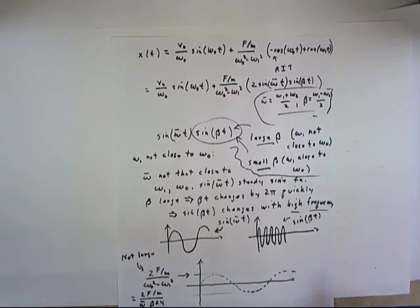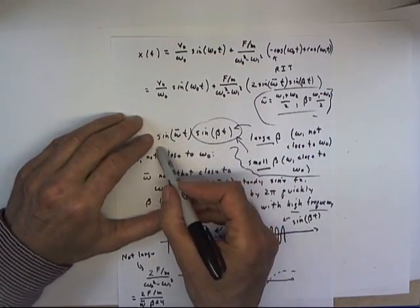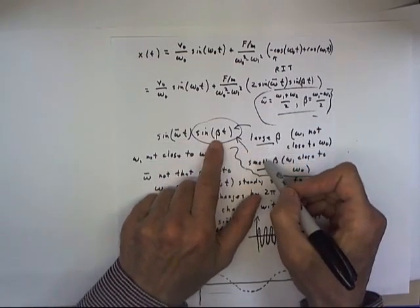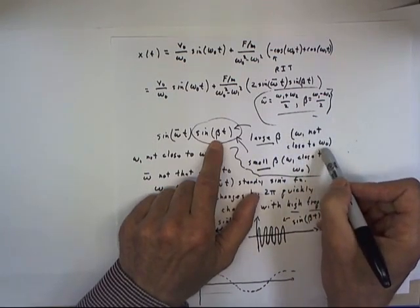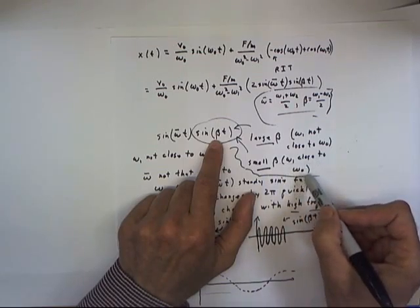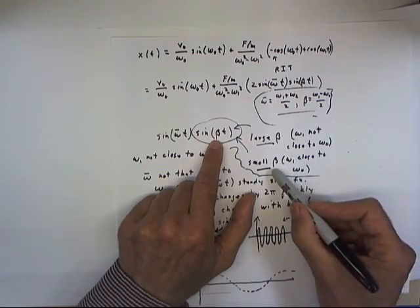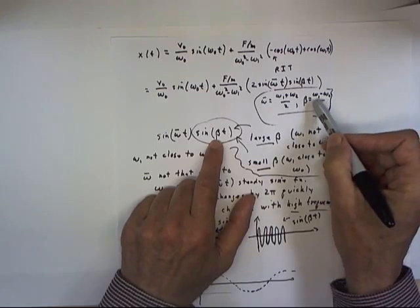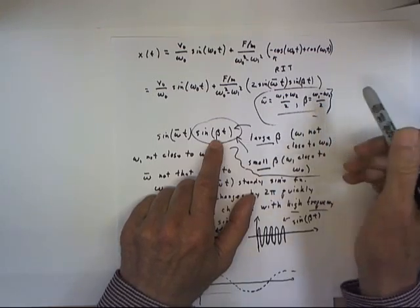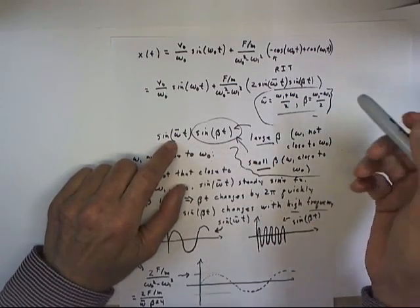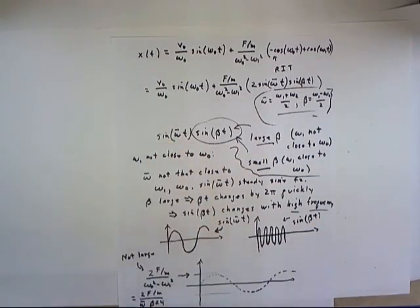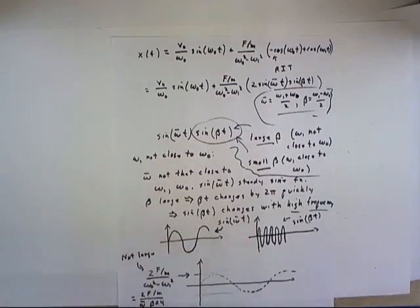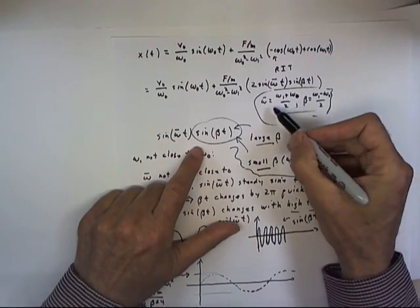Now let's look at all that in a little more detail. The key product to understand is sine of omega-bar t times sine of beta t. We get a large beta if omega-1 is not close to omega-naught, and we get a small value of beta if omega-1 is close to omega-naught. Remember that beta is half the difference between omega-naught and omega-1, given by the expression omega-1 minus omega-naught over 2. And omega-bar is the average of omega-1 and omega-naught.